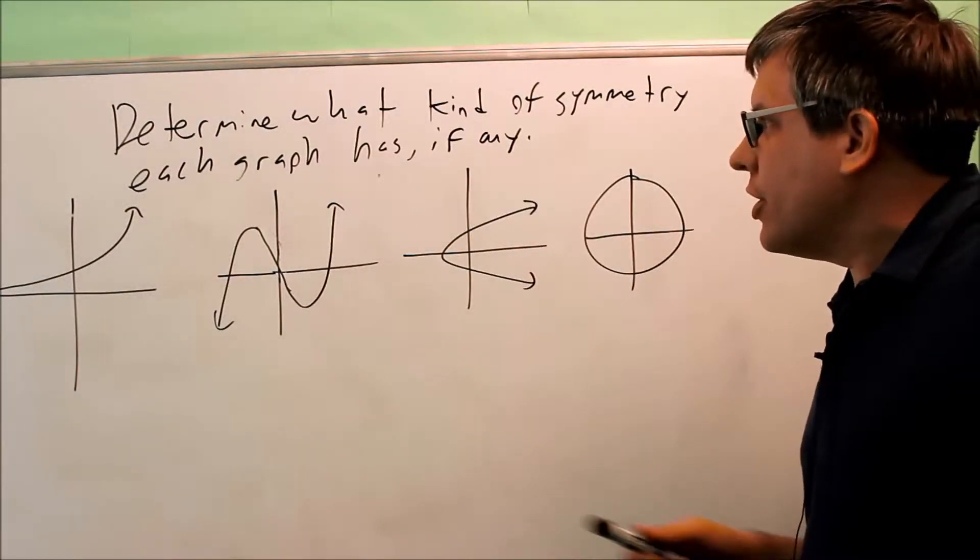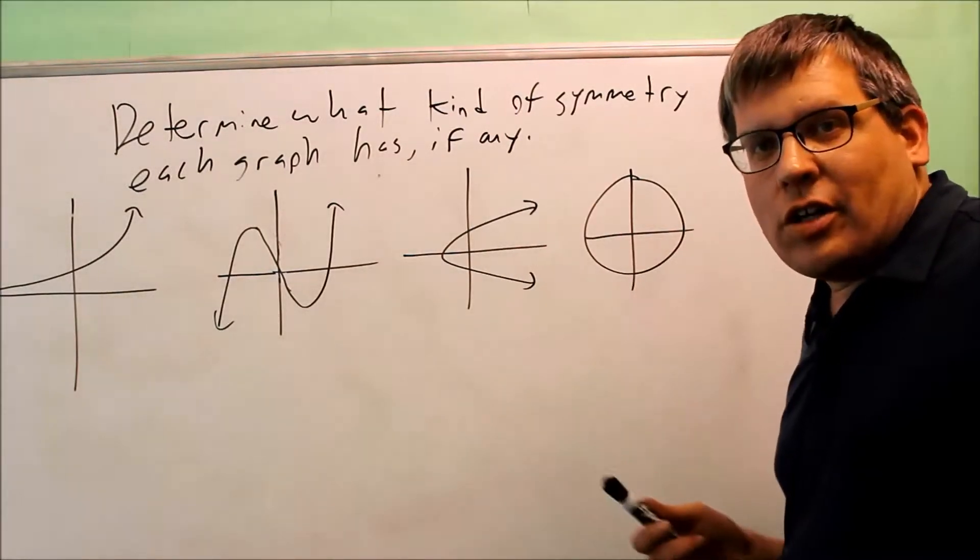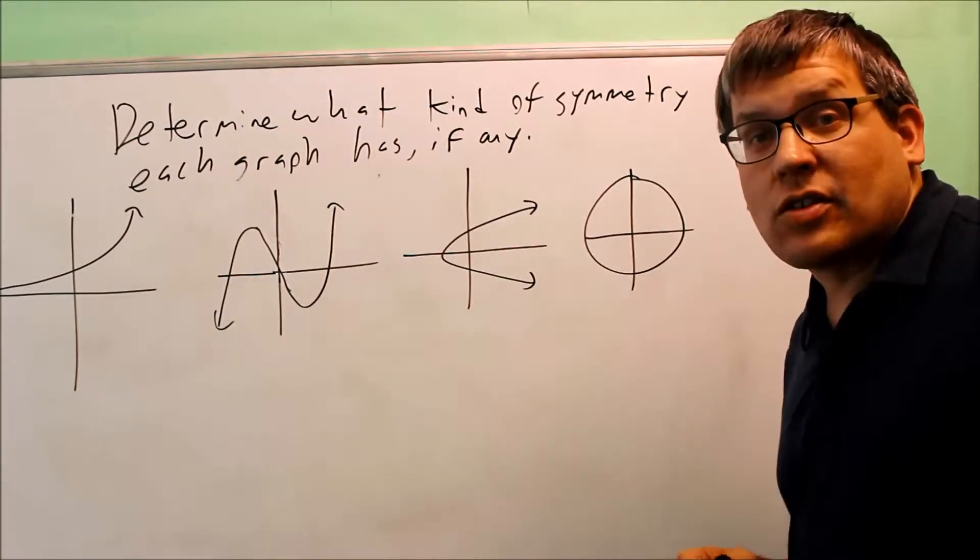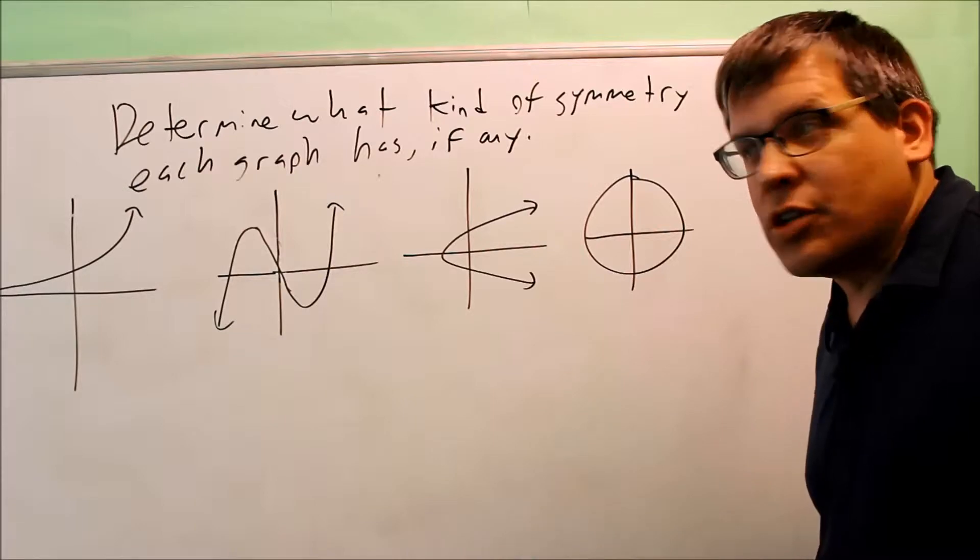We want to determine what type of symmetry each graph has, if any. There are three different types of symmetries: x-axis symmetry, y-axis symmetry, and origin symmetry.